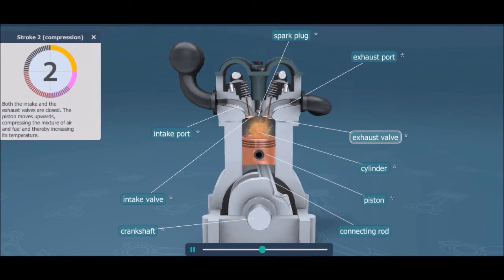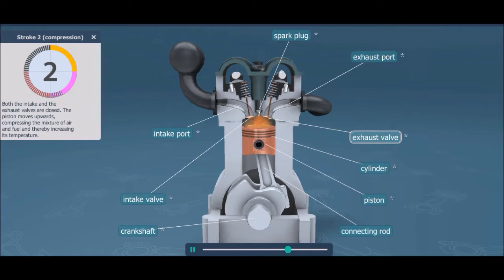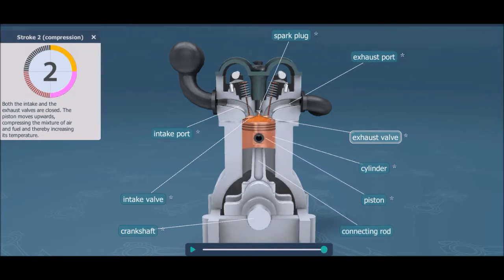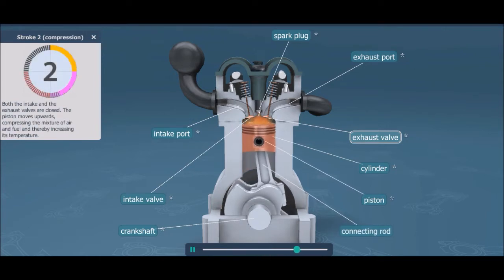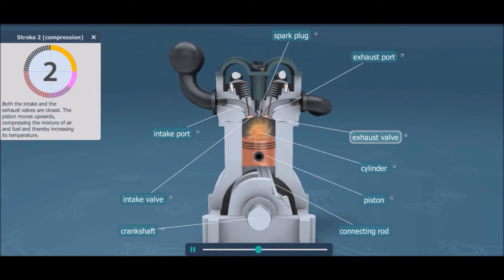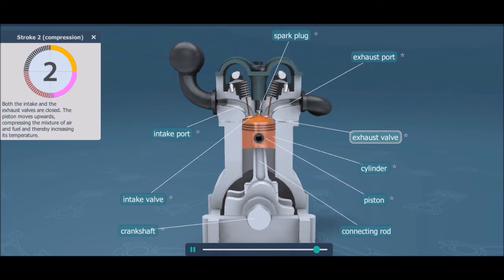Compressing the air-fuel mixture allows more energy to be released when the charge is ignited. The charge is the volume of compressed air-fuel mixture trapped inside the combustion chamber ready for ignition. The inlet and outlet valves must be closed to ensure that the cylinder is sealed, resulting in compression.